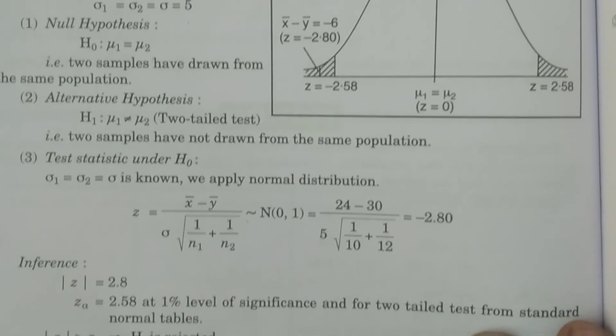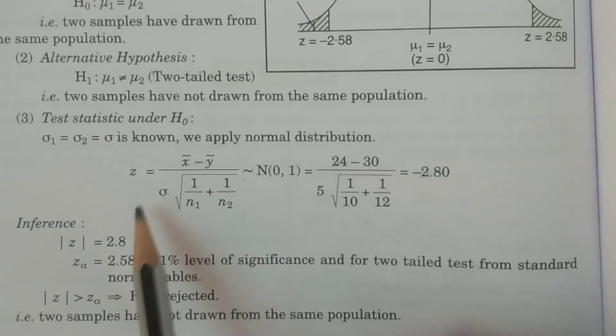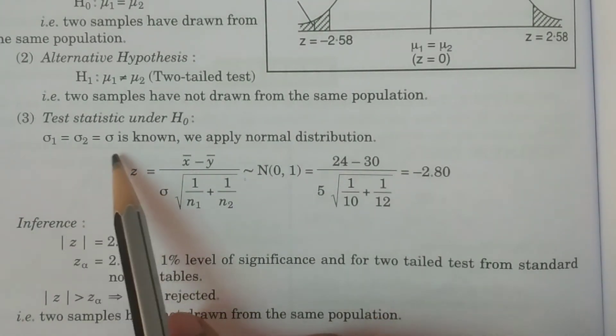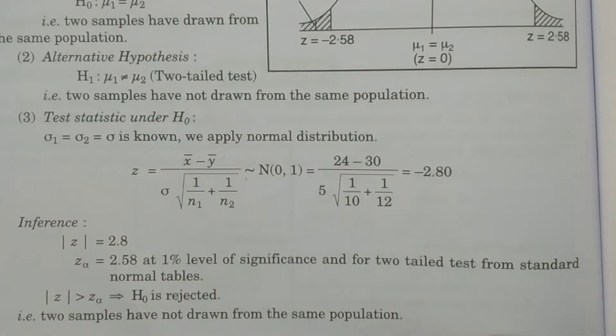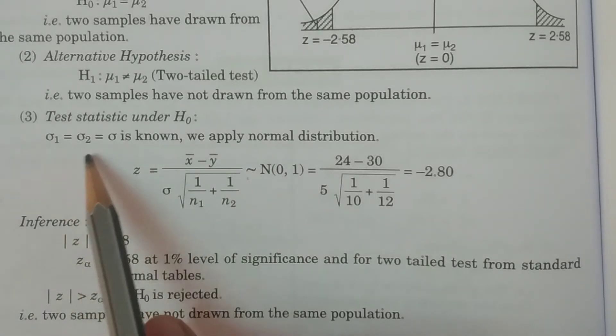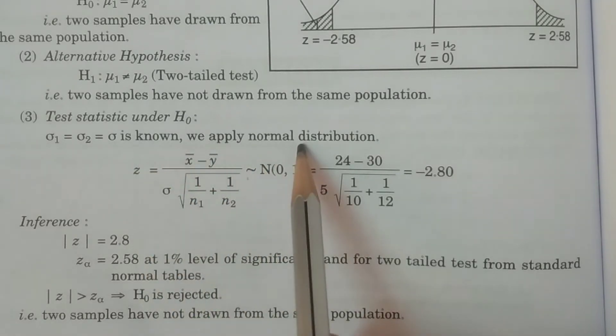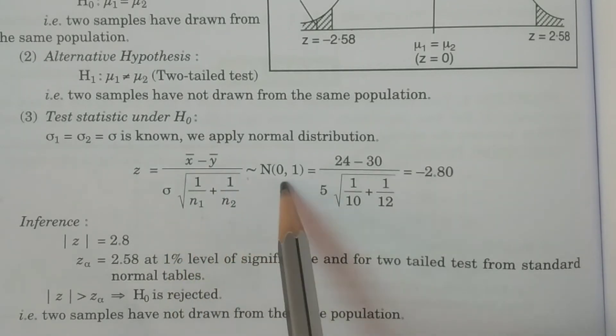The third point, test statistic under H0. So, here it is, when sigma is known, sigma1 equal to sigma2 equal to sigma, it is known. Then we have to apply the normal distribution. That is the case of large sample test. In the case of large sample test, whatever we use the test statistic under H0 z, the normal distribution test statistic, the same thing it is going to be applied here. In case 1, that is, sigma is known, we apply normal distribution. The formula is, that is equal to x bar minus y bar divided by sigma into square root of 1 by n1 plus 1 by n2, follows N(0,1).